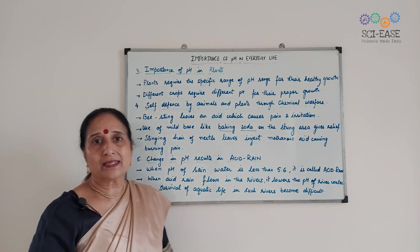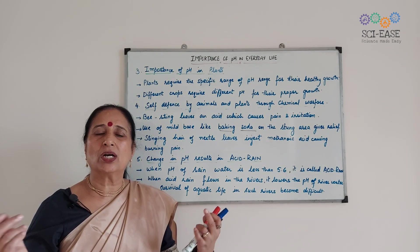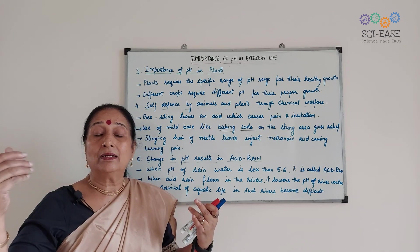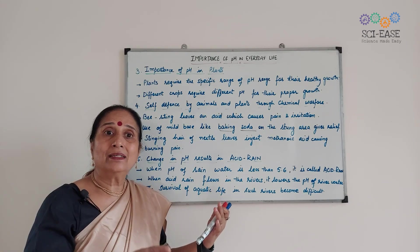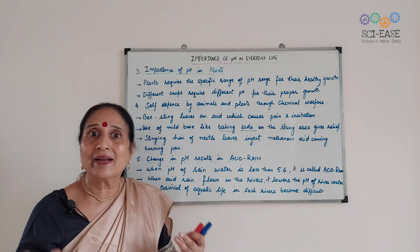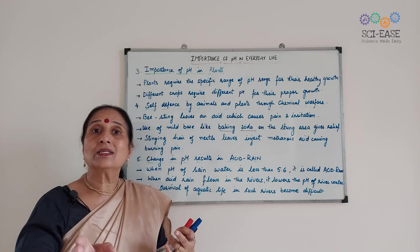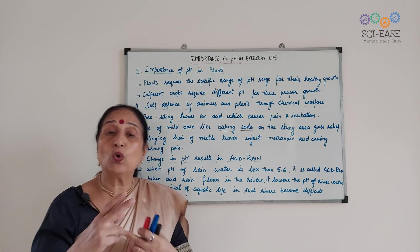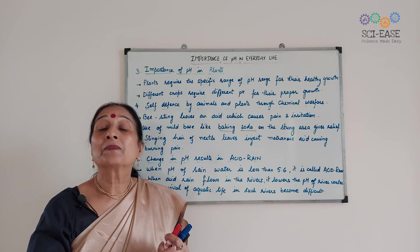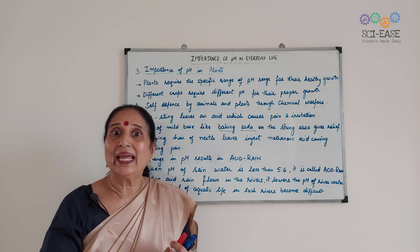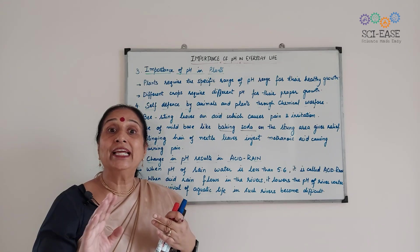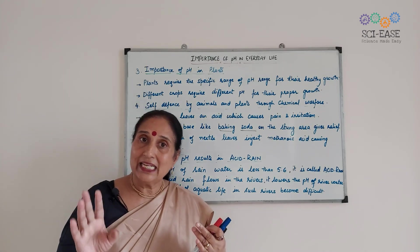Next is: change in pH results in acid rain. Where there are many factories, sulfur dioxide and nitrogen dioxide gases are formed. These are acidic gases that react with rainwater. Take the case of the Taj Mahal — the yellowing of the Taj Mahal is due to acid rain. Sulfur dioxide and nitrogen dioxide react with rainwater to form acid rain, and when acid rain falls on monuments made of marble, it corrodes them, causing the yellowing of the marble.